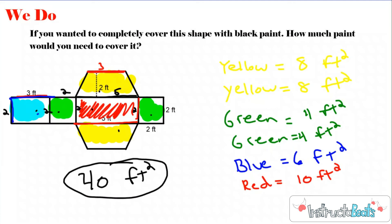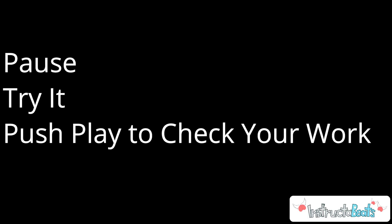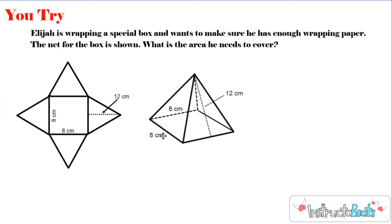Just showing you how visualizing that 3D model can help you figure out the surface area of this net, and it can help you figure out how each dimension they already give you can help you find the area for each of those faces. Here we have our You Try problem. Elijah is wrapping a special box and wants to make sure he has enough wrapping paper. The net for the box is shown — what is the area he needs to cover? You're going to pause the video, visualize the 3D shape, use that to figure out any missing dimensions, find the area of each face, and add them together. When you're ready, push play to check your work.